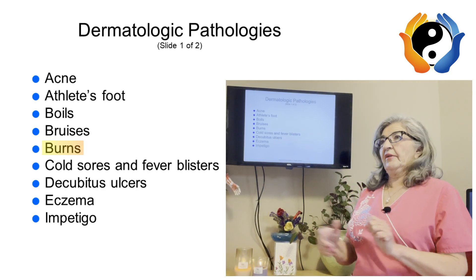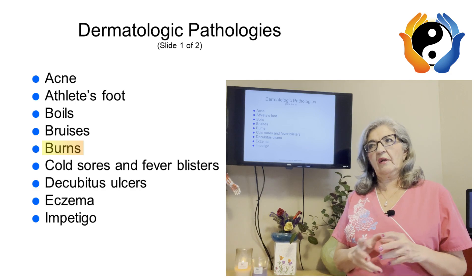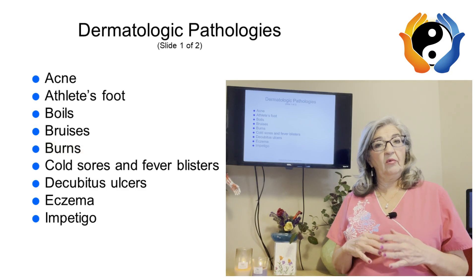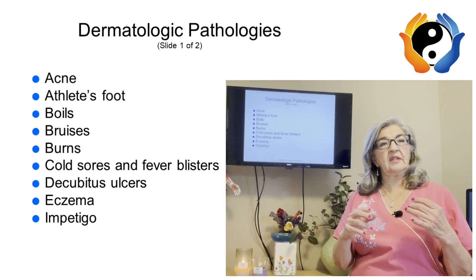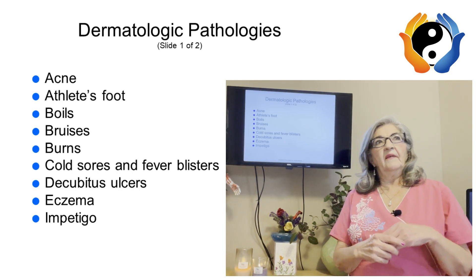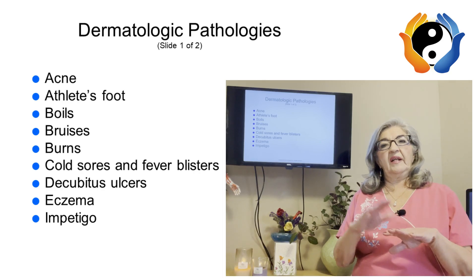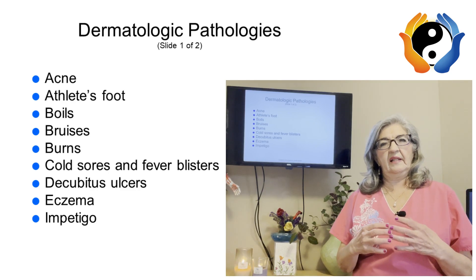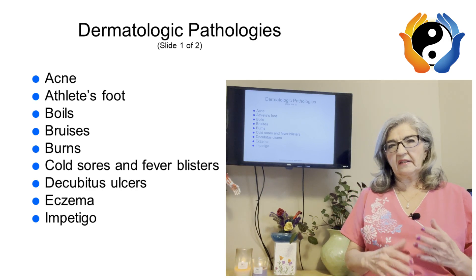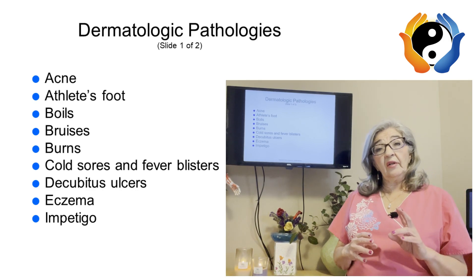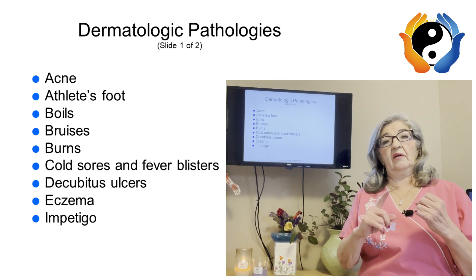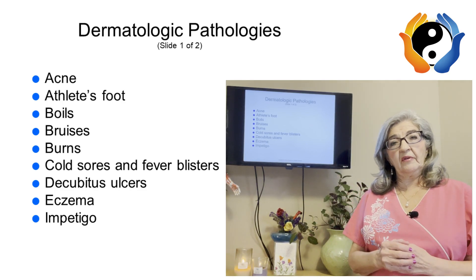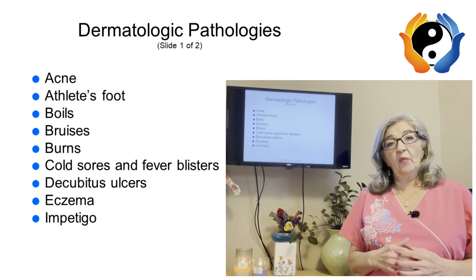The next pathology is burns. Burns cause damage to the epidermis, dermis, hypodermis, and even bone depending on severity. A first-degree burn affects just the epidermis. A second-degree burn affects the epidermis and parts of the dermis but doesn't damage the sebaceous glands, sweat glands, or Merkel discs deeper down. A third-degree burn goes through the epidermis, dermis, and hypodermis. Fourth-degree burns reach the bone and muscle.